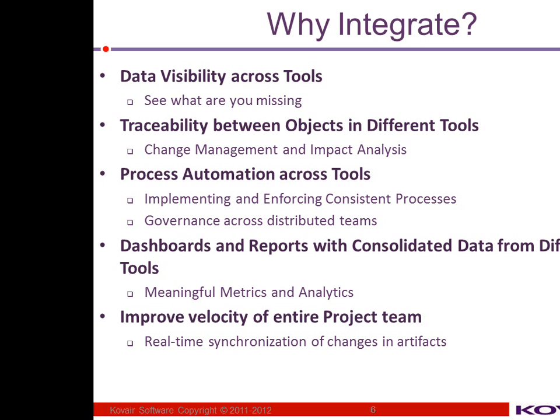Traceability across objects in different tools. Different best-of-breed tools are being used across the project lifecycle, and we want to be able to know: a change in one item is going to impact which other items in different tools. This is not possible unless you get the information from all these tools into a single repository where you have complete, end-to-end traceability. That is where it is possible to get perfect impact analysis.